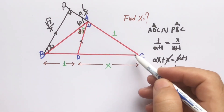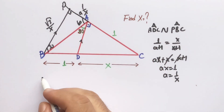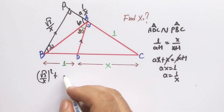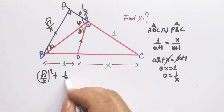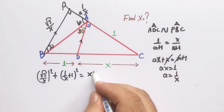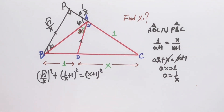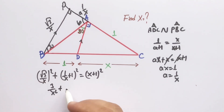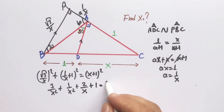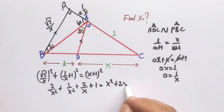Now we can apply the Pythagorean theorem in the biggest triangle: (√3 over x)² + (1 over x + 1)² equals (x + 1)². Expanding: 3 over x² + 1 over x² + 2 over x + 2x + 2x + 1.